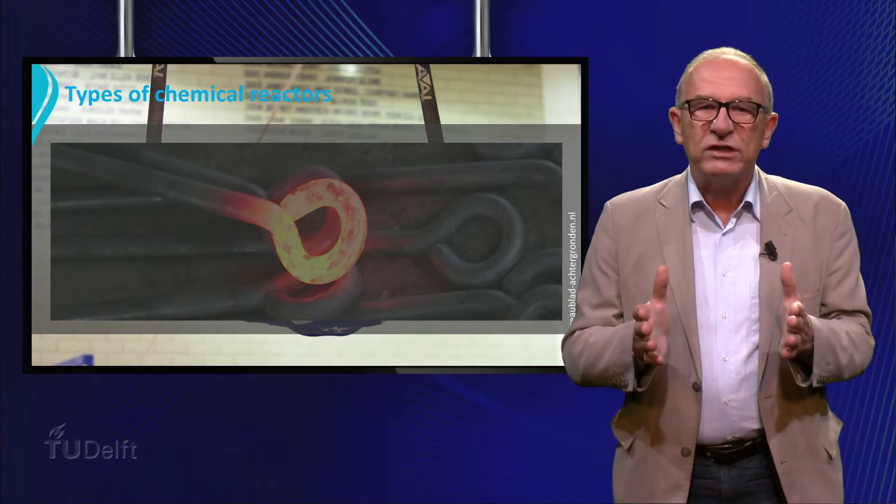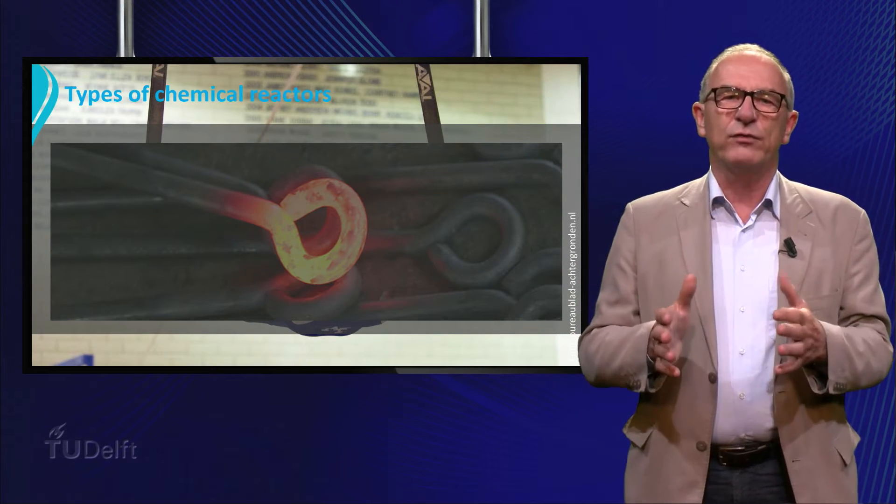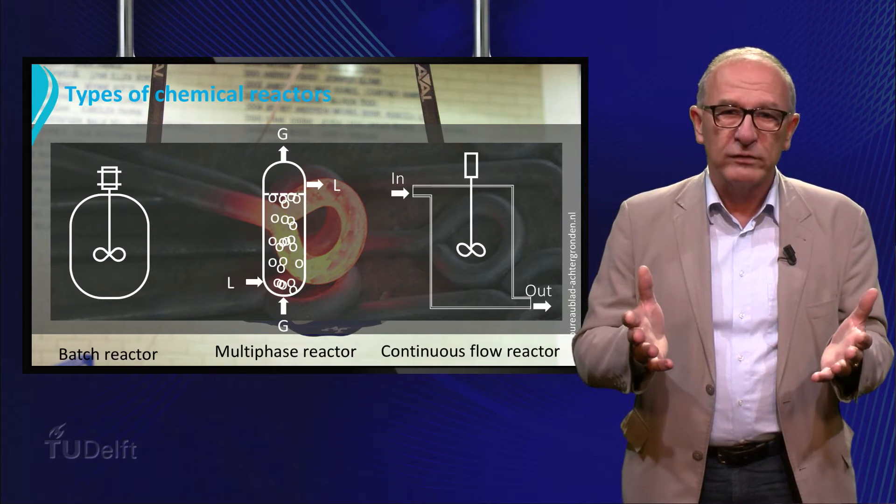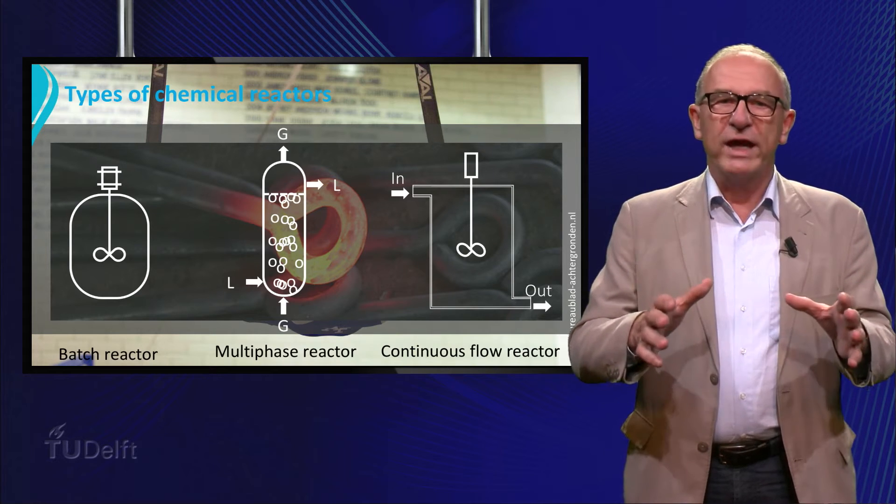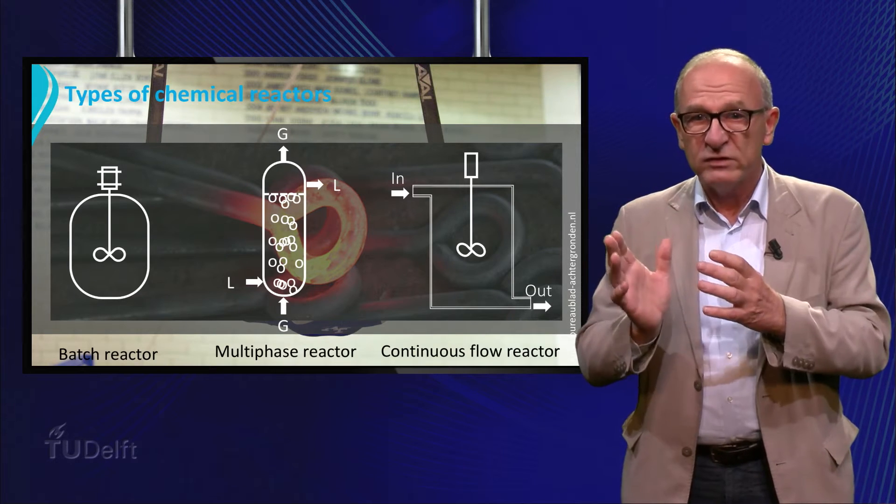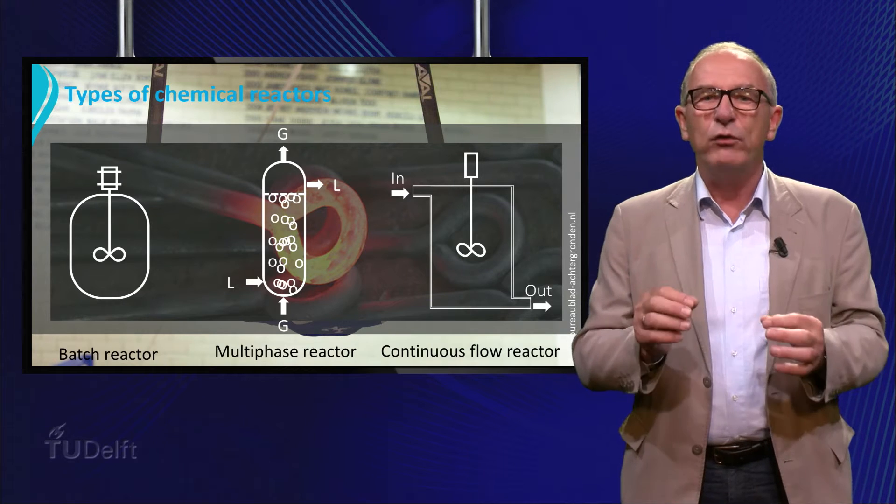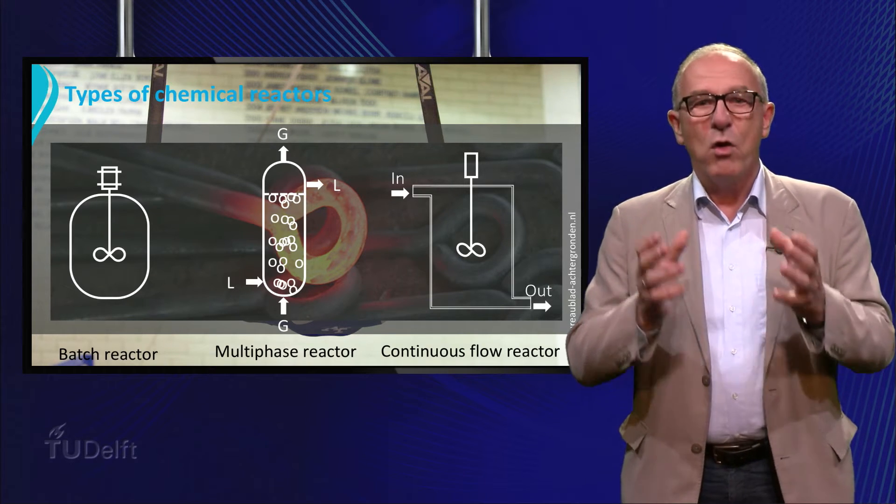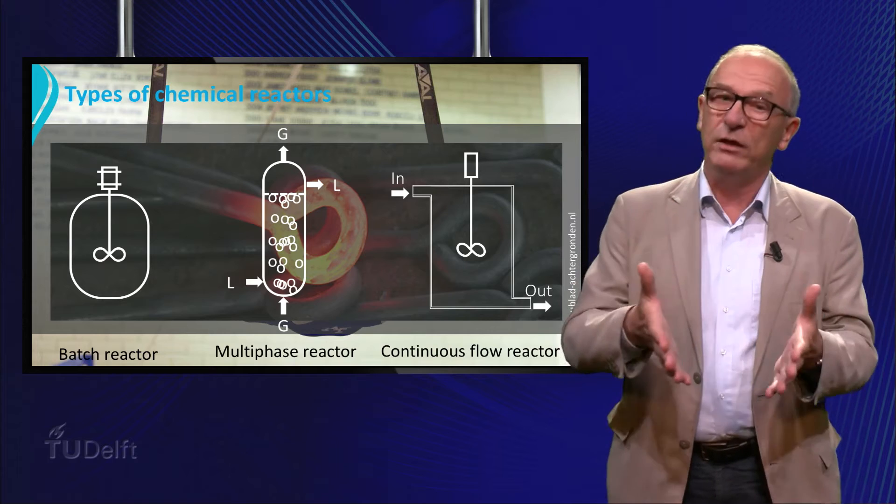We can distinguish many different types of reactors, for example batch reactors, multi-phase reactors, continuous flow reactors. Over all these reactors we set up mass balances and energy balances to calculate, for example, the change of concentration in time or the change of temperature in the reacting fluid.